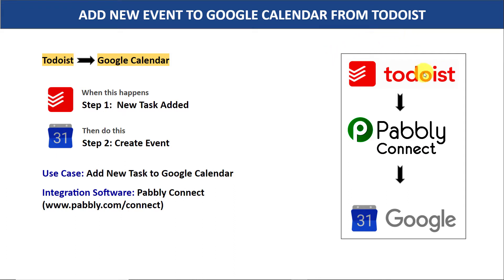Imagine this: you have created a task in Todoist. Now to schedule this task for your teammates, you plan to create an event in Google Calendar. You have two choices. The first is to copy all the details from Todoist and manually create an event in Google Calendar. The problem with this approach is it's very repetitive and tiresome. So I suggest bringing in some automation so that when a new task is added in Todoist, it will automatically create an event in Google Calendar. In this video, we will be using Pabbly Connect to integrate Todoist and Google Calendar. The best part is there is no need for coding skills or programming knowledge.